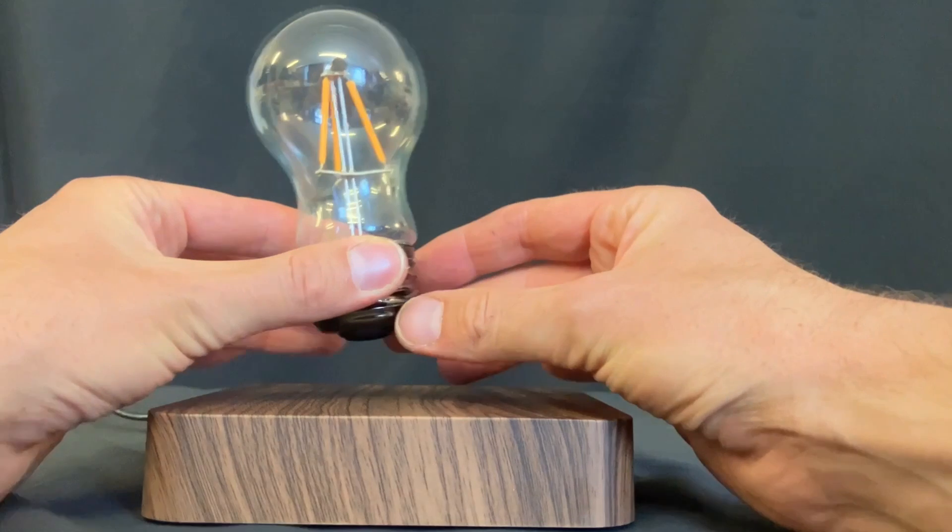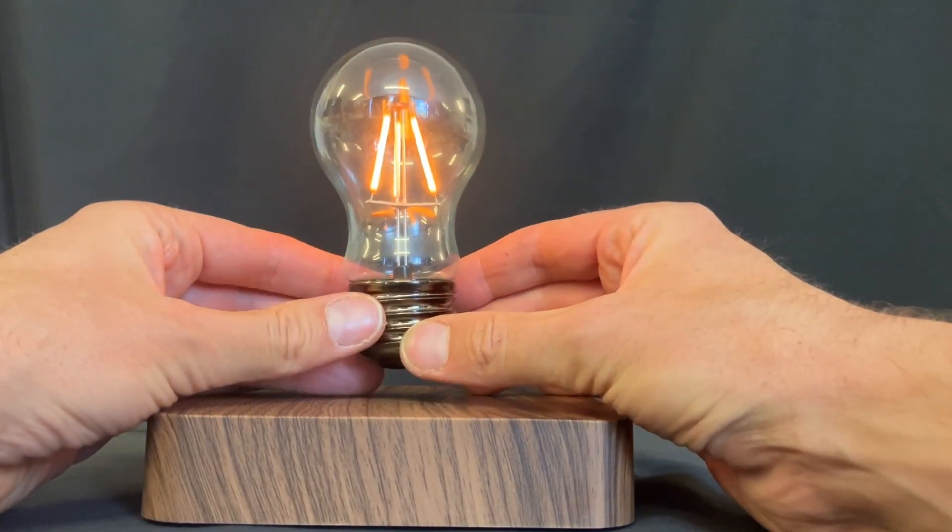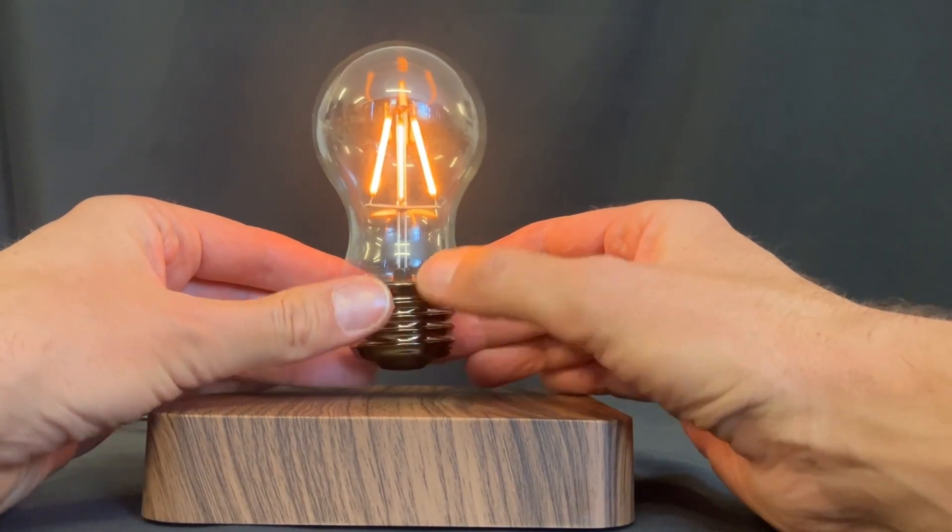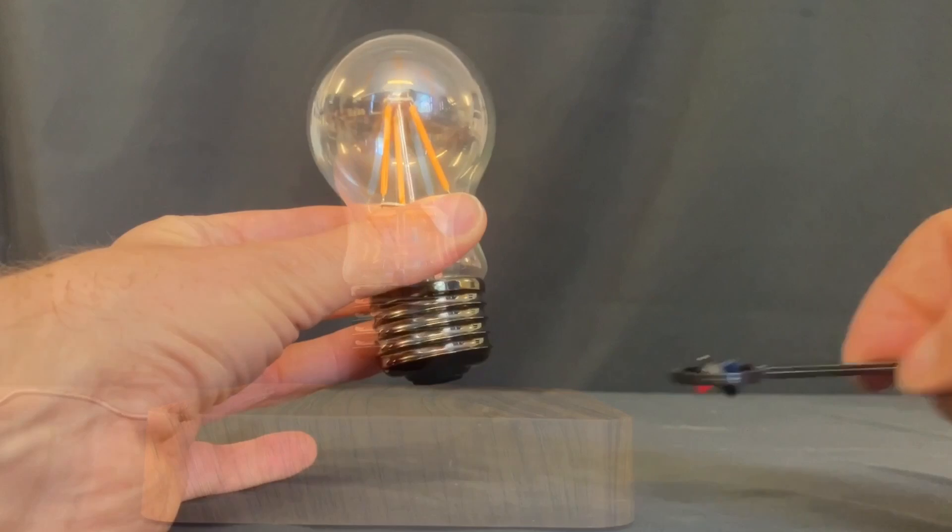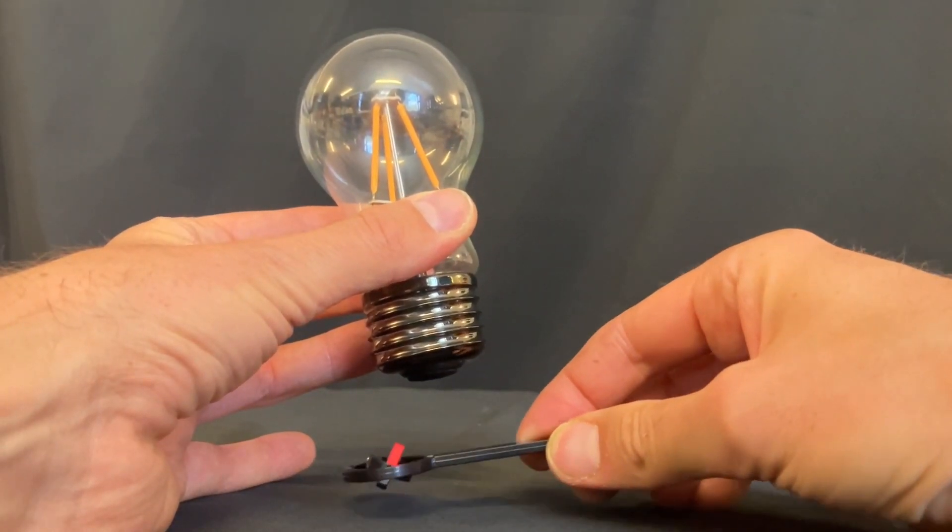To get it to levitate without being pulled down, you have to get it right in the centre of the base. So let's use a magnet probe to see what's going on with the magnetism.